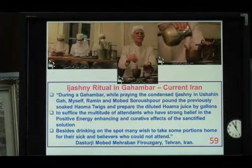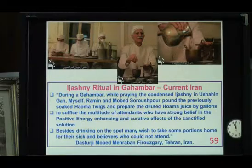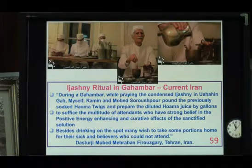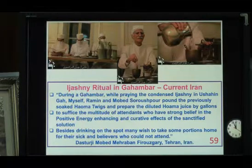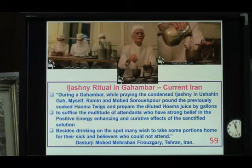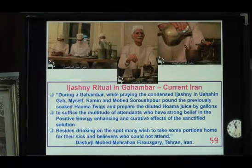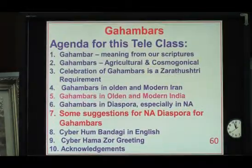During a Gambara while praying the condensed Yasna — not the full 72 chapters but condensed Yasna in Ushenga — myself, Ramin his nephew, and Moabed Sureshpur pound the previously soaked Haoma twigs and prepare the diluted Haoma juice by gallons to suffice the multitude of attendants who have strong belief in the positive energy-enhancing and curative effects of the sanctified solution. Many attendants love to drink this Haoma juice, and beside drinking on the spot, they take it home for those who cannot attend.